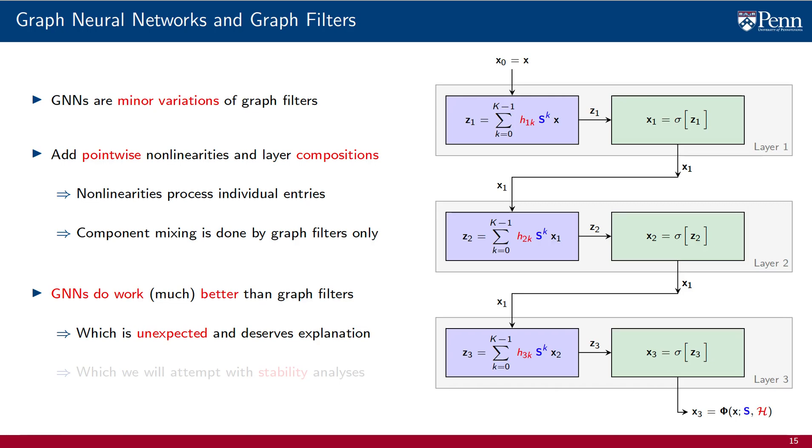Since GNNs are close to graph filters, we should expect them to work well too, but not better. Certainly, not much better. But reality is reality. Experiments are there to be explained. There are somewhat unexpected stability properties of GNNs that explain their better performance relative to graph filters. We will study this in upcoming lectures.